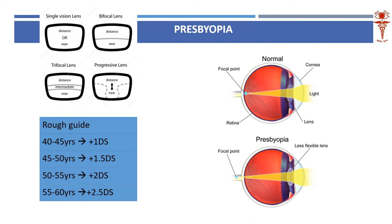The next refractive error is presbyopia. Anybody above 40 years of age loses their accommodative power and needs reading glasses. A plus 1 addition lens is used in the near portion of the spectacle, giving rise to bifocal or progressive lenses. The addition power increases with age: 45–50 years needs plus 1.5, 50–55 years needs plus 2, and 55–60 years needs plus 2.5 diopters.